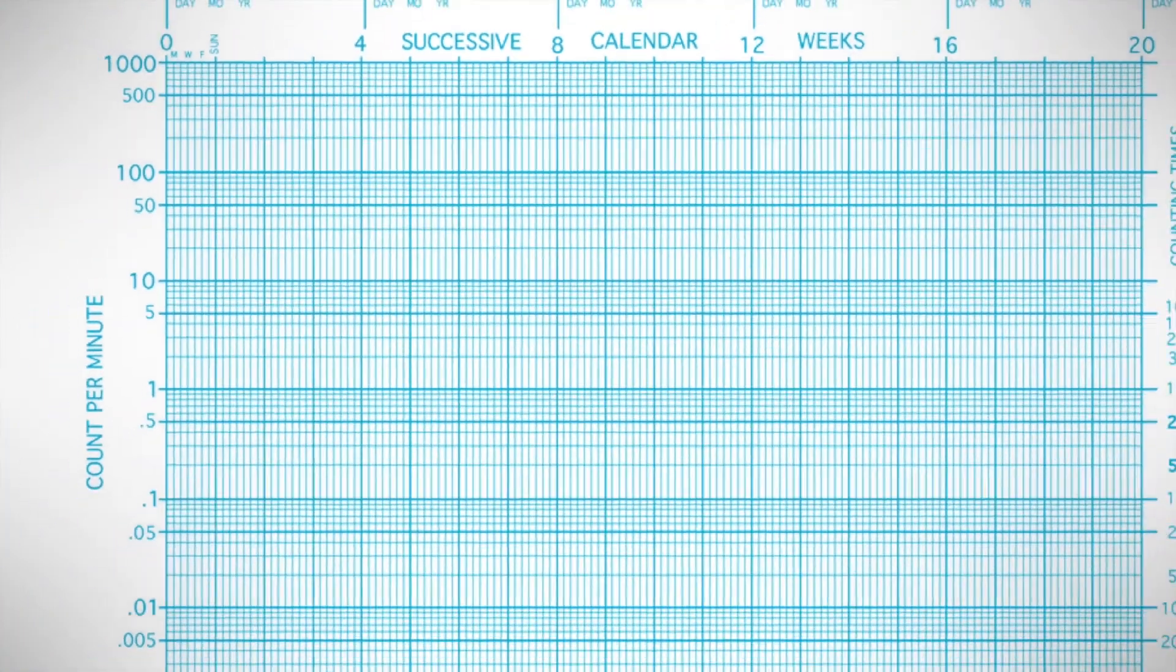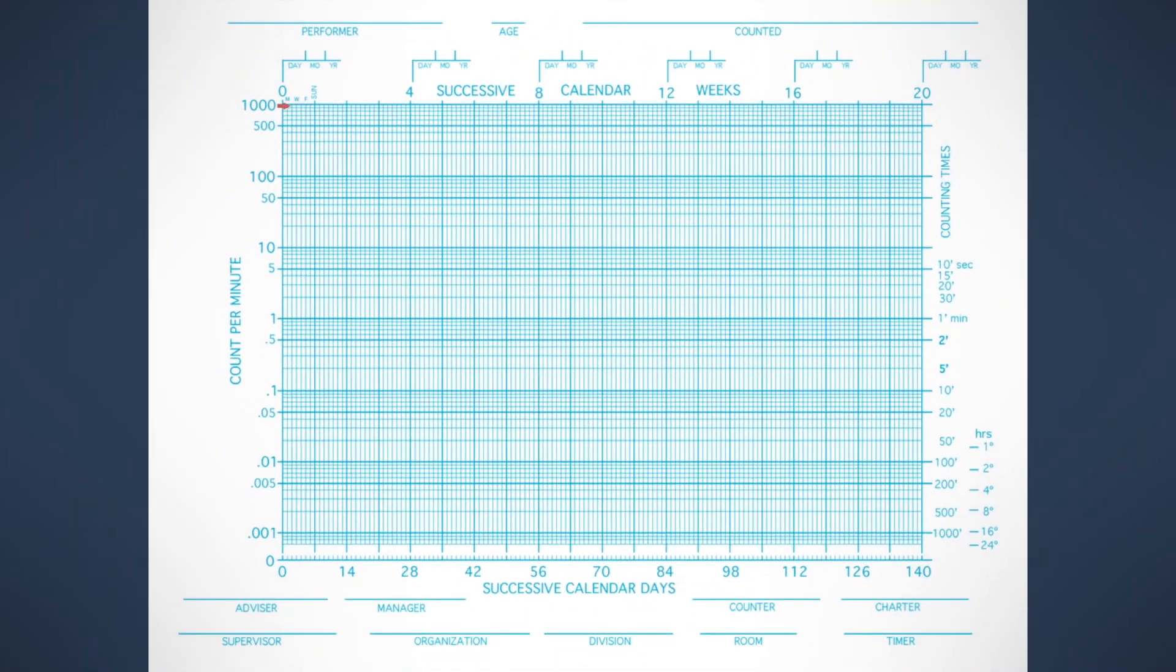Now you know a complete week has passed. That's one week on the chart. Here's what two weeks looks like, that's four weeks. If you look across the top of the chart, you'll see that it says successive calendar weeks, and those numbers show you how many weeks have passed.